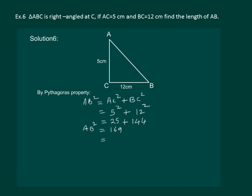And 169 can be written as 13 square, so AB is equal to 13 cm.